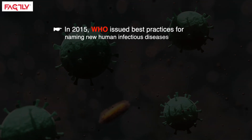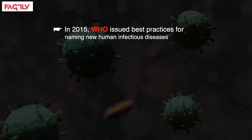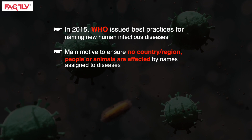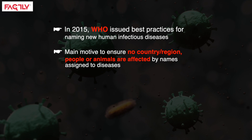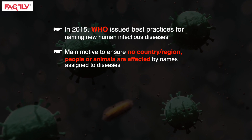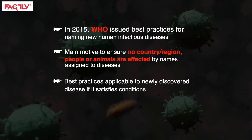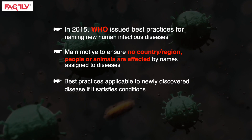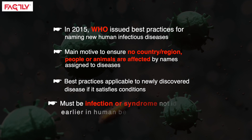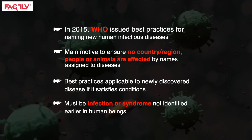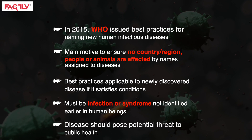The WHO issued a set of best practices for naming new human infectious diseases. The main motive behind this was to ensure that no country or region, people or animals are affected by names assigned to diseases. These best practices are applicable to any newly discovered disease that satisfies some conditions: it must be an infection or syndrome not identified earlier in human beings, and the disease should pose a potential threat to public health.